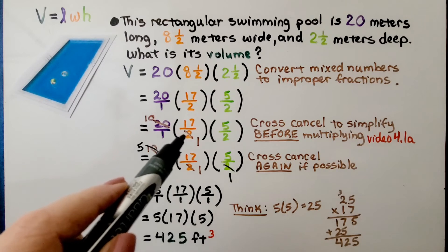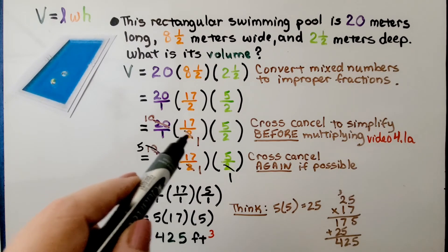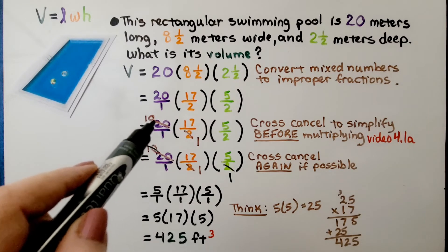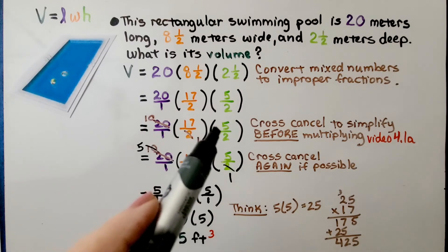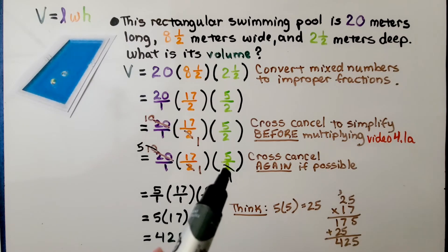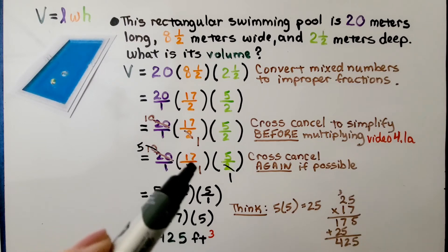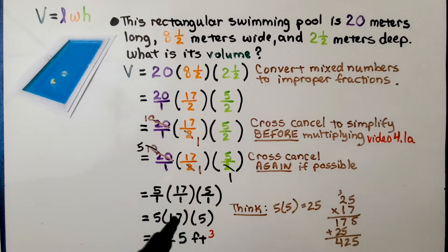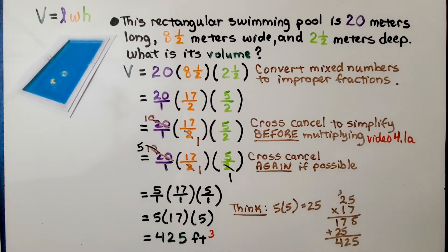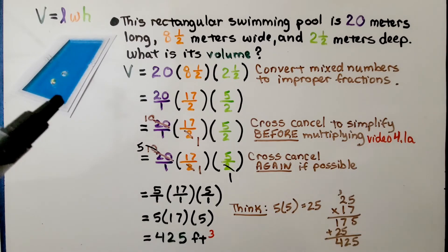We have a 20 and a 2. There is one 2, so we cross this off and make it a 1, and there are ten 2s in 20, so we make that a 10. Now if you look over here, we have a 2 and a 10 — we can cross-cancel again. There's one 2 here, so we turn it into a 1, and 10 has five 2s, so we turn that into a 5. Now we have 5 over 1, 17 over 1, and 5 over 1 — that means 5 times 17 times 5. We think 5 times 5 is 25, and by the commutative property of multiplication we can multiply in any order. So 25 times 17 gives us 425. The swimming pool has a volume of 425 cubic meters.